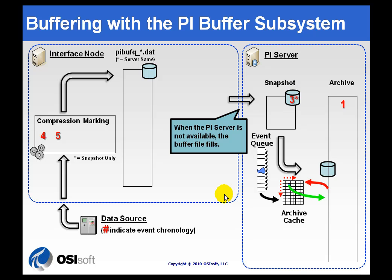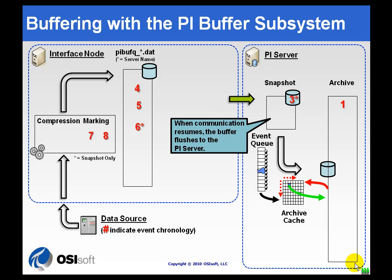If the PI Server is not available — the network goes down or the server is being brought down for upgrade — then these values can't be sent. So we just start queuing data up into the first queue. That queue is read in the order in which we brought the data in when we reestablish the connection. Once the connection is reestablished, we take that data out in the order it came in — it's a first-in, first-out queue. We bring it into the archive and we haven't lost any data.